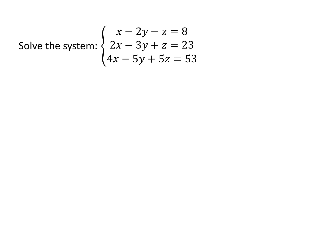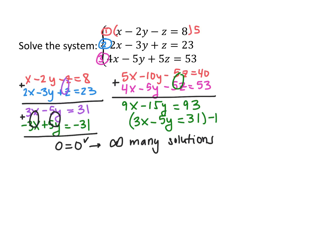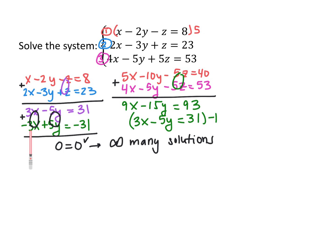Here is another system of three equations. I decided to eliminate z from equations 1 and 2, and 1 and 3. Adding equations 1 and 2 gave 3x minus 5y equals 31. For equations 1 and 3, I multiplied equation 1 by 5, added to equation 3, got 9x minus 15y equals 93, which simplified to 3x minus 5y equals 31. Setting up the two-equation system, multiplying by negative 1 and adding, all variables cancelled, leaving 0 equals 0 — a true statement — so this system has infinitely many solutions.